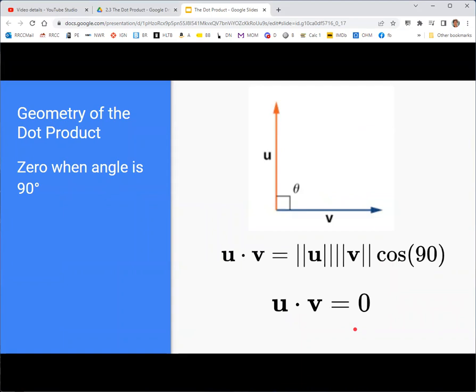And this is as small as it gets if u and v are pointed at right angles to each other, because then you have cosine of 90, which is 0. So it doesn't matter how long they are. The dot product of perpendicular vectors is going to be 0.